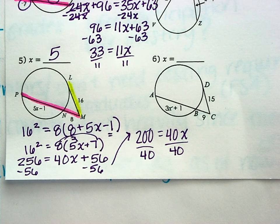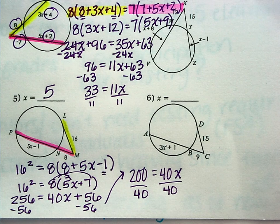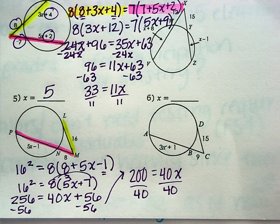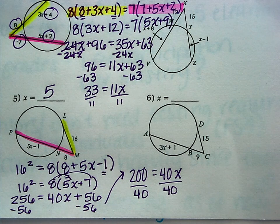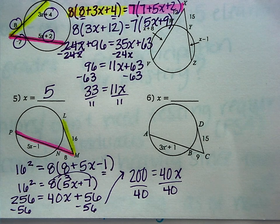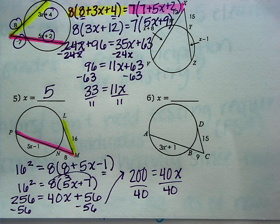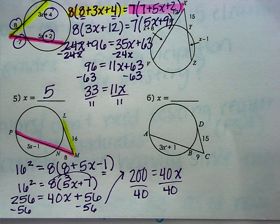So you'll solve number 6 in the same way. Alright, so those are our new properties for intersecting chords, secants, and tangents. Not dealing with angles, dealing with segment lengths. Alrighty, let me know if you guys have any questions. Bye!